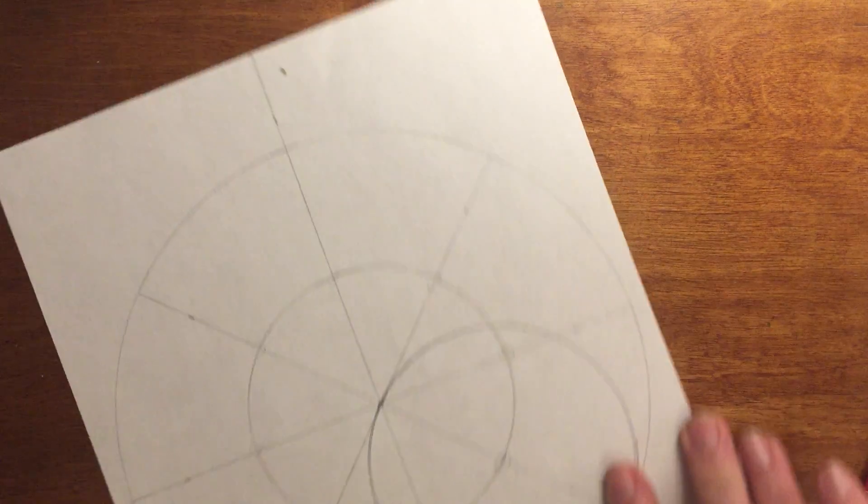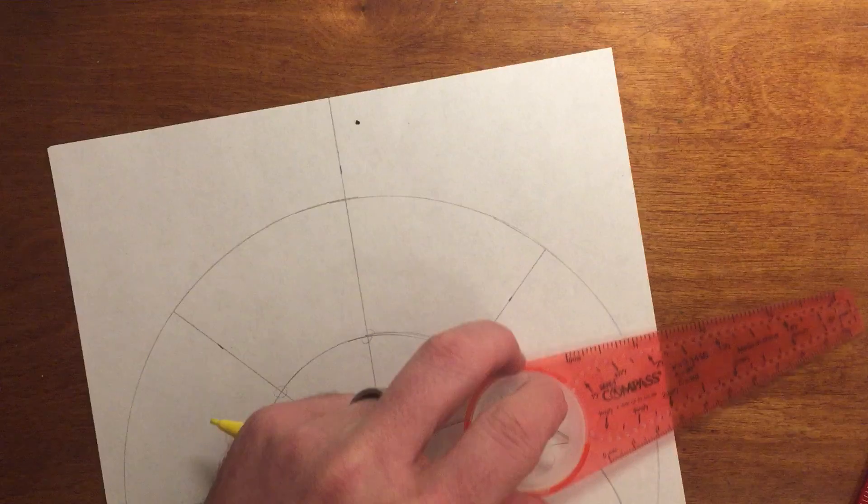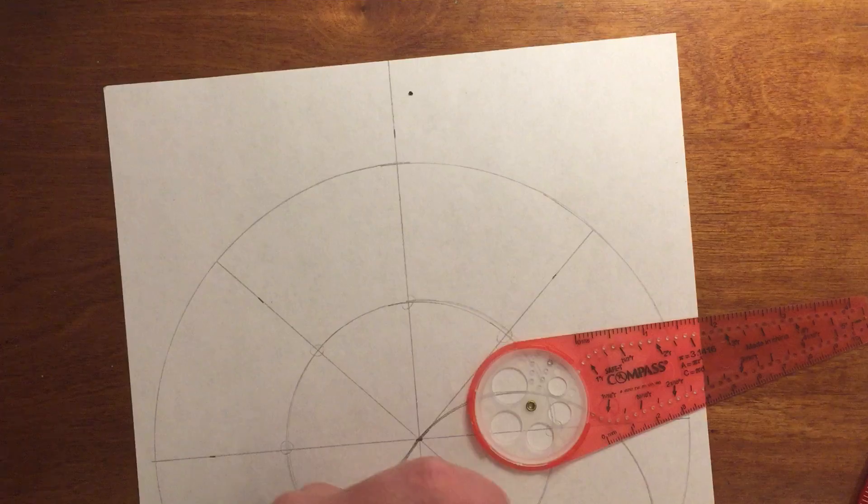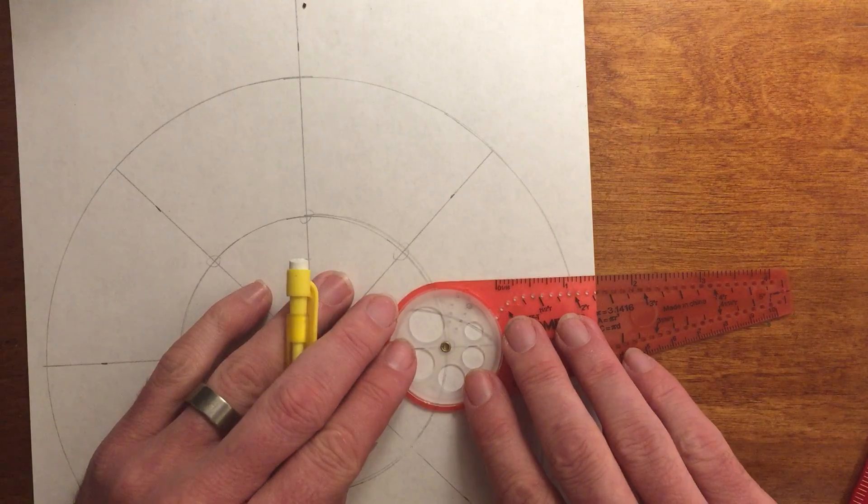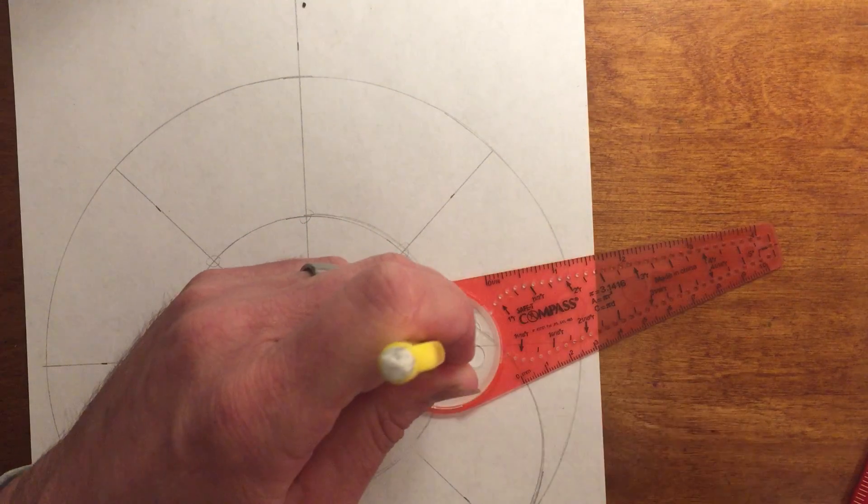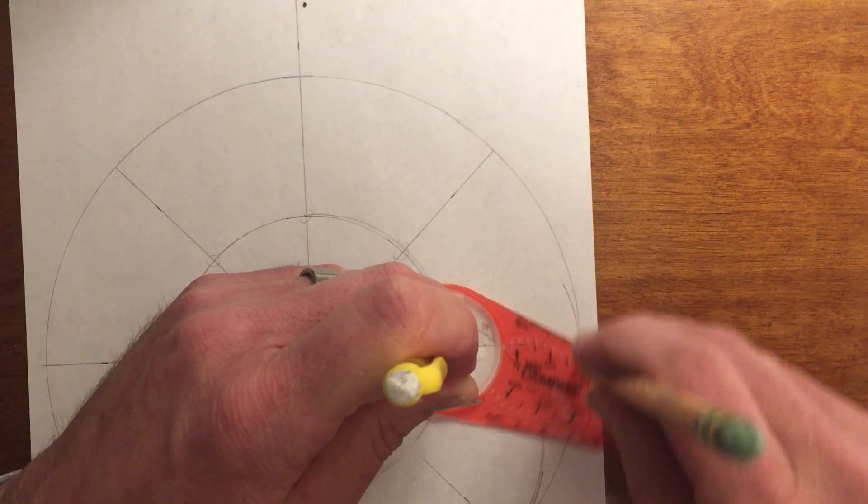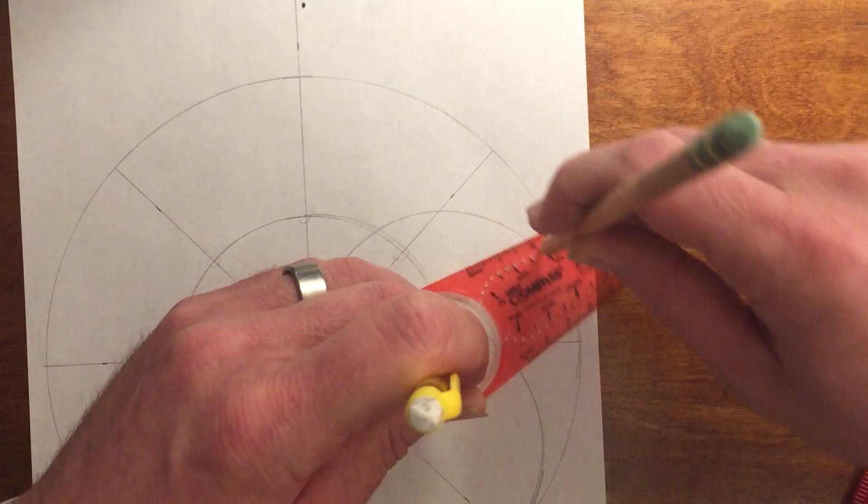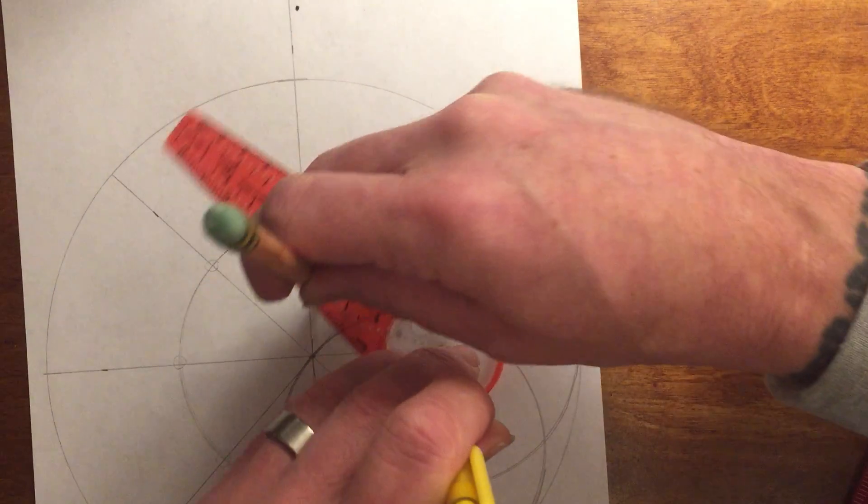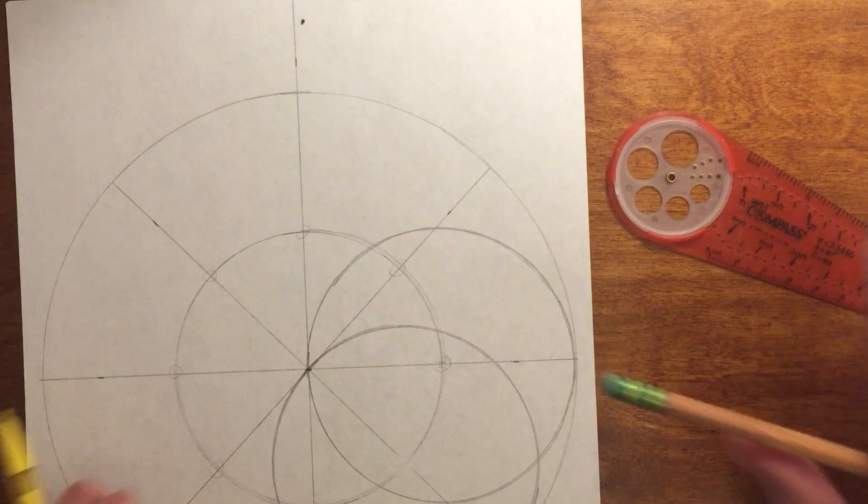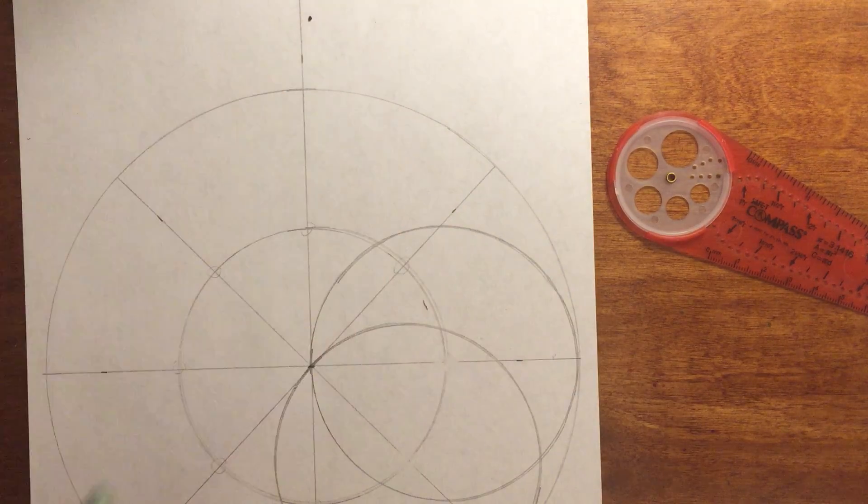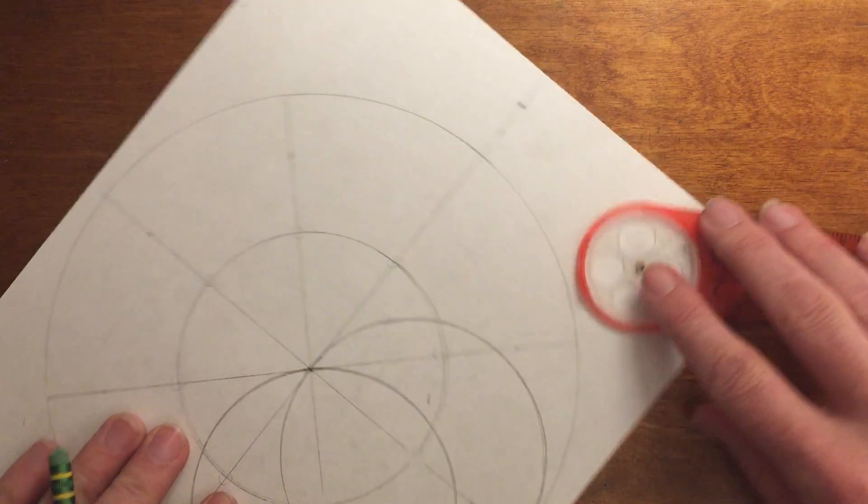Then I'm done with that one. I might want to erase that now because it'll help me remember that I'm done with it. Then I'm going on to number two here. Once again, I'm finding that two-inch mark. I've got circle number two.